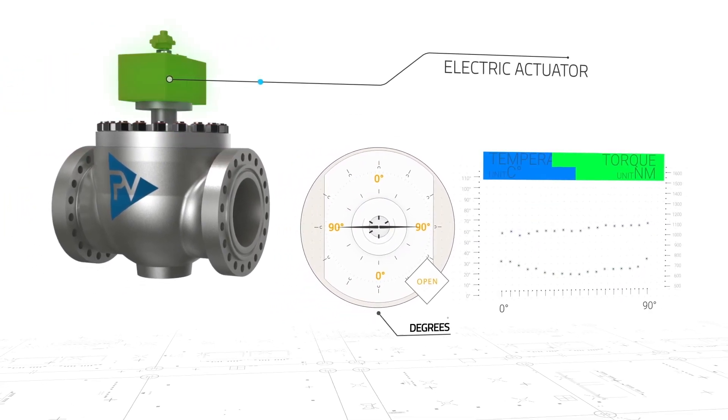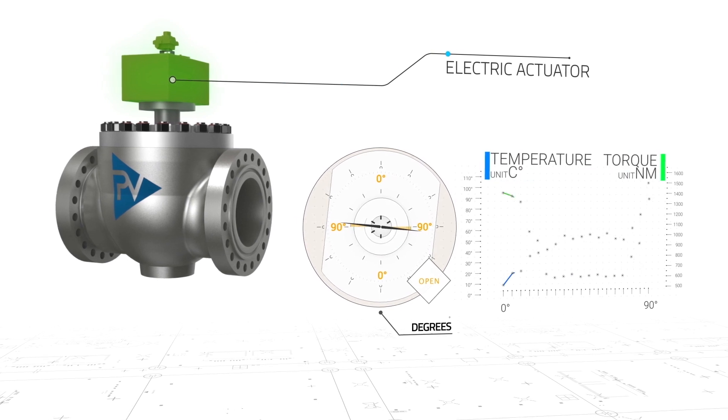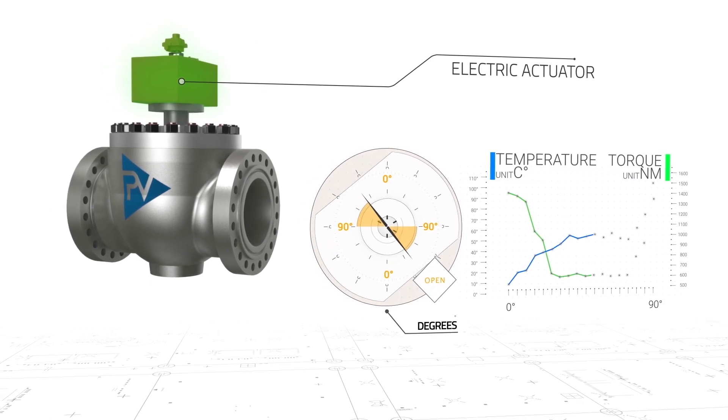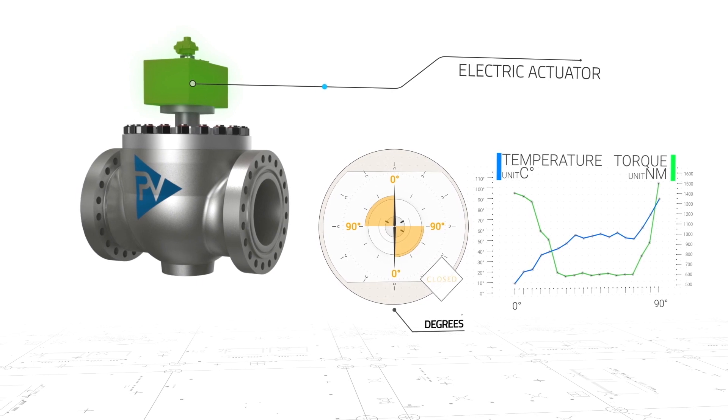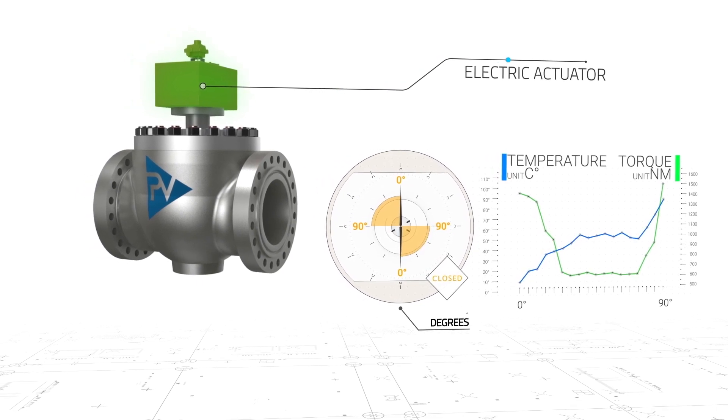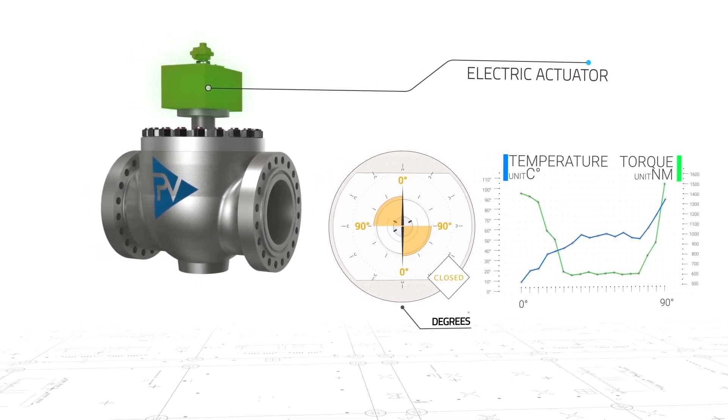Monitoring of torque on electric actuated valves. By monitoring the absorbed current, it is possible to evaluate the torque applied to operate the valve. The signal is connected to the data acquisition and transfer system.